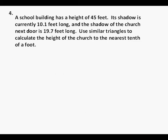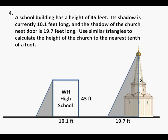Problem 4. A school building has a height of 45 feet. Its shadow is currently 10.1 feet long, and the shadow of the church next door is 19.7 feet long. Use similar triangles to calculate the height of the church to the nearest tenth of a foot.